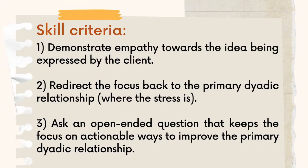Feedback: Overall 'medium.' Criteria one — empathy — definitely met; Amy felt validated. Criteria two — redirecting back to the romantic relationship — also met. Criteria three — asking an open-ended question focused on actionable ways to improve the primary dyadic relationship — could be improved. The attention was brought back to the relationship, but the actionable improvement piece needs more work. Suggestion to try again.